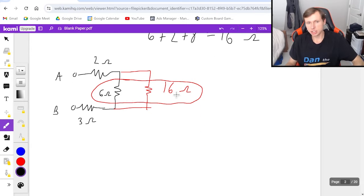So if I want to add these two together, it's 1 over 6 plus 1 over 16 to the negative first power. When I plug that in a calculator, I get 4.4 ohms.